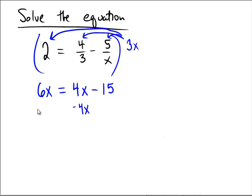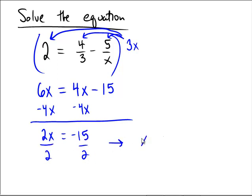In fact, I'll put in all our little steps here and just say 6x minus 4x is 2x. All that's left over here is a negative 15, and then when we divide by 2, we end up seeing that x equals negative 15 halves.